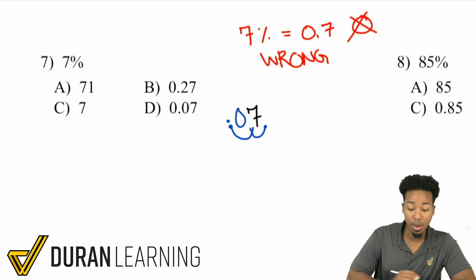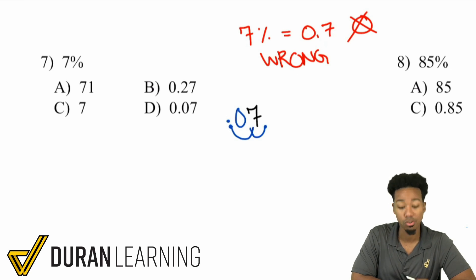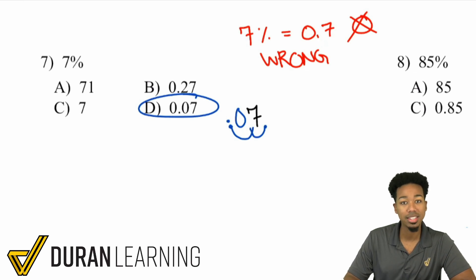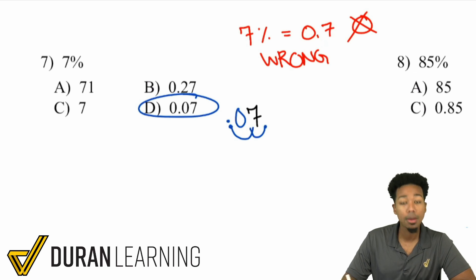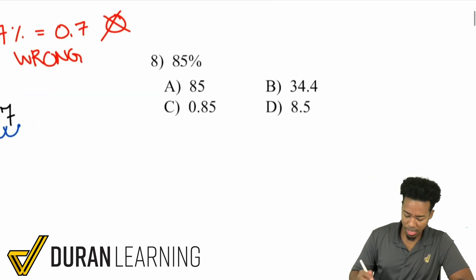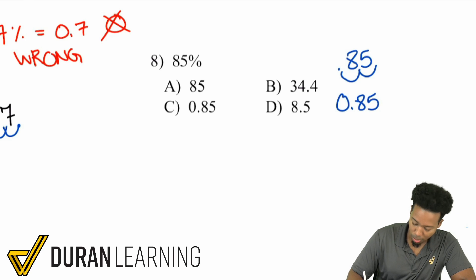There's a space there, and you have to put a zero in there. So 7% is not 0.7 — 7% is 0.07. Biggest mistake that a lot of people make. Move that decimal over two times, and any empty spaces you see, put a zero in there, and you are fine. Let's check out 85%. You start off with 85, take that decimal and move it to the left once, twice — and you get 0.85.